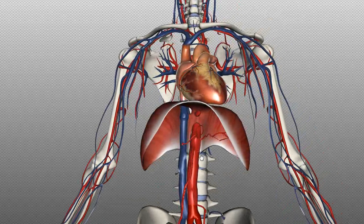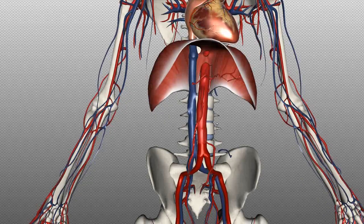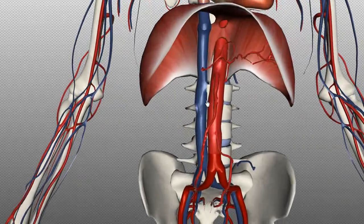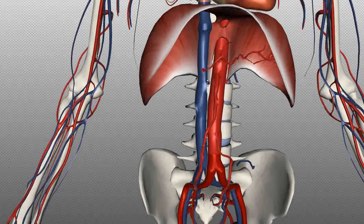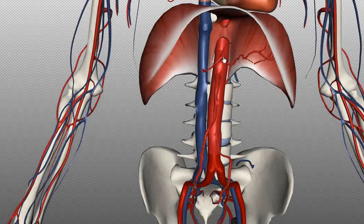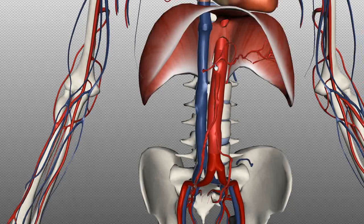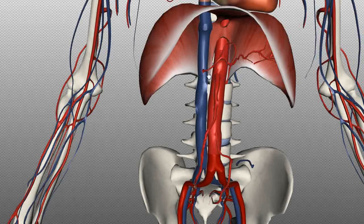Looking at the abdominal section of the aorta, you can see these three branches here coming off it. I've removed a lot of the arteries to keep it simpler, leaving just some of the main branches. The other branches will be covered in tutorials on the abdominal organs. This top branch is the celiac axis, which has three branches: the common hepatic artery, the left gastric artery, and the splenic artery. The branch below is the superior mesenteric artery, and below that is the inferior mesenteric artery.